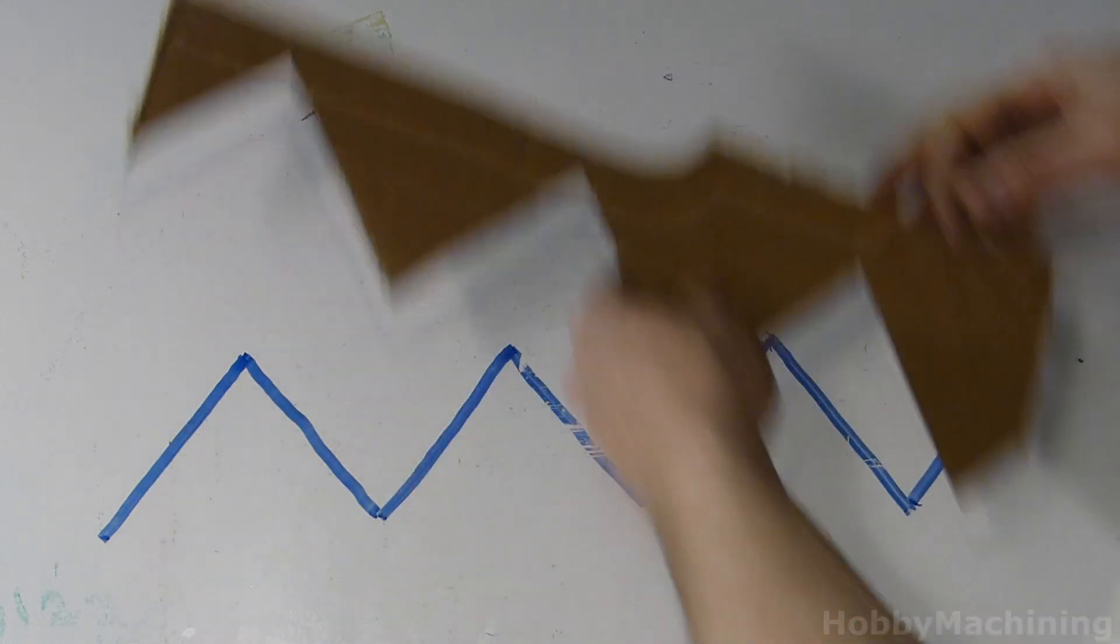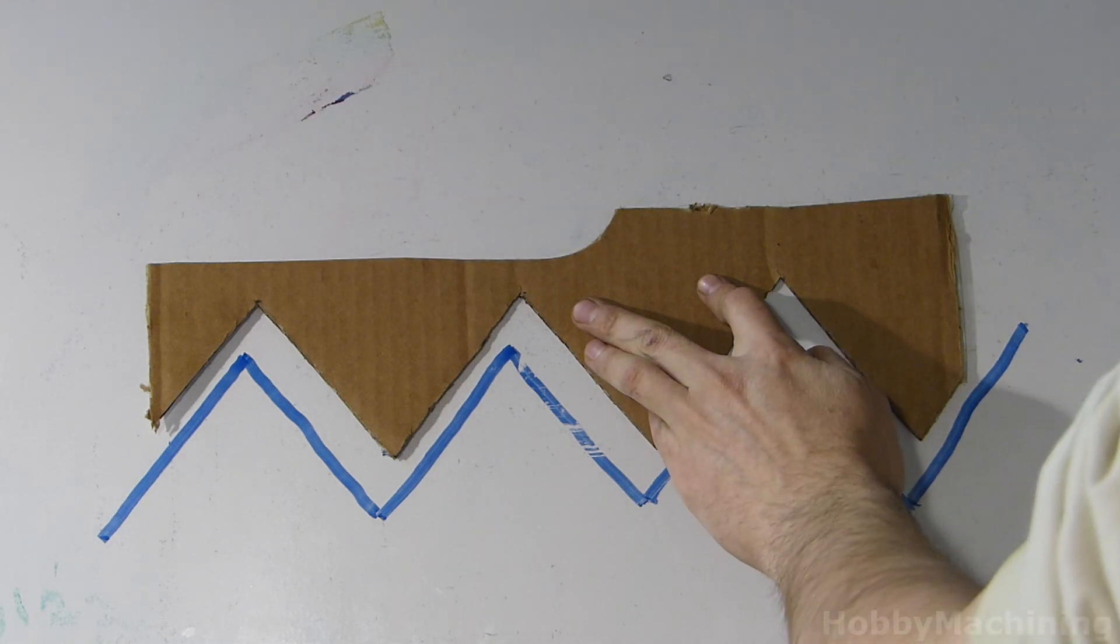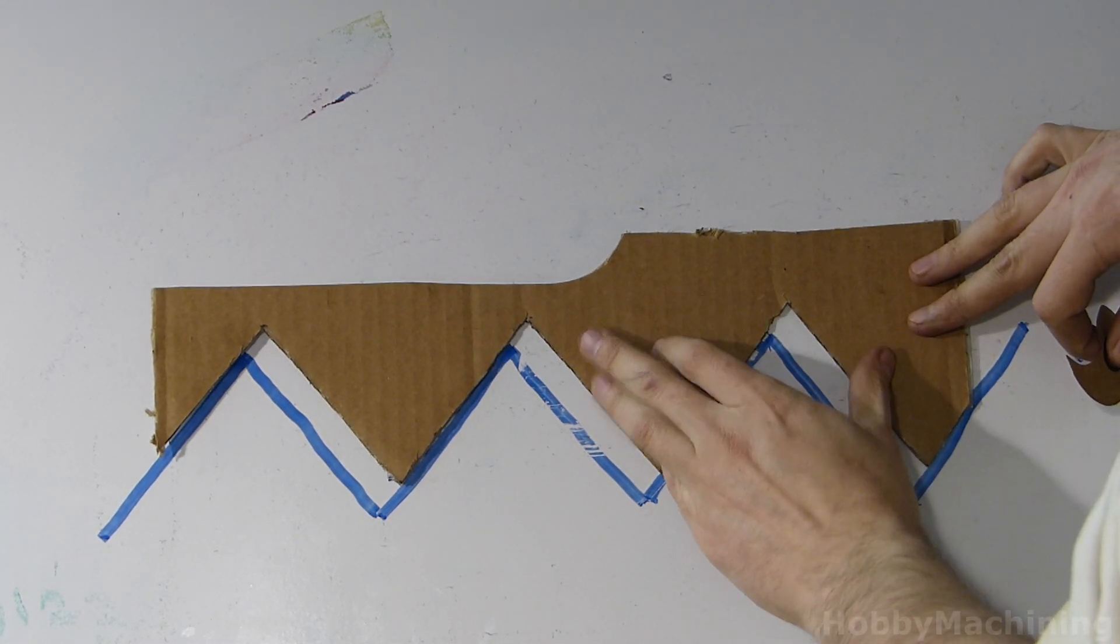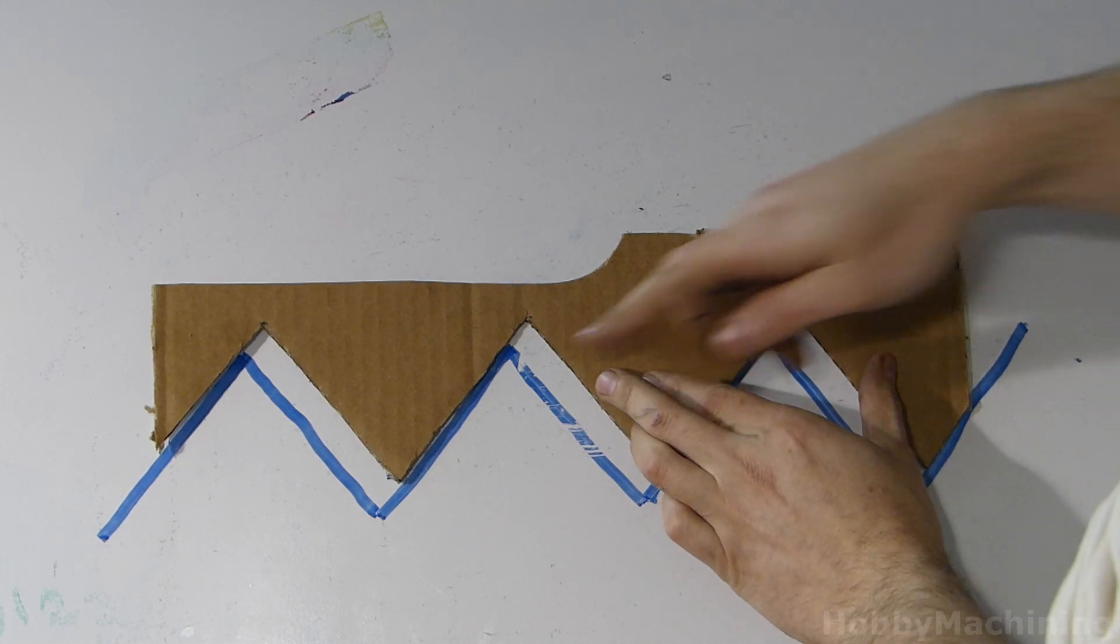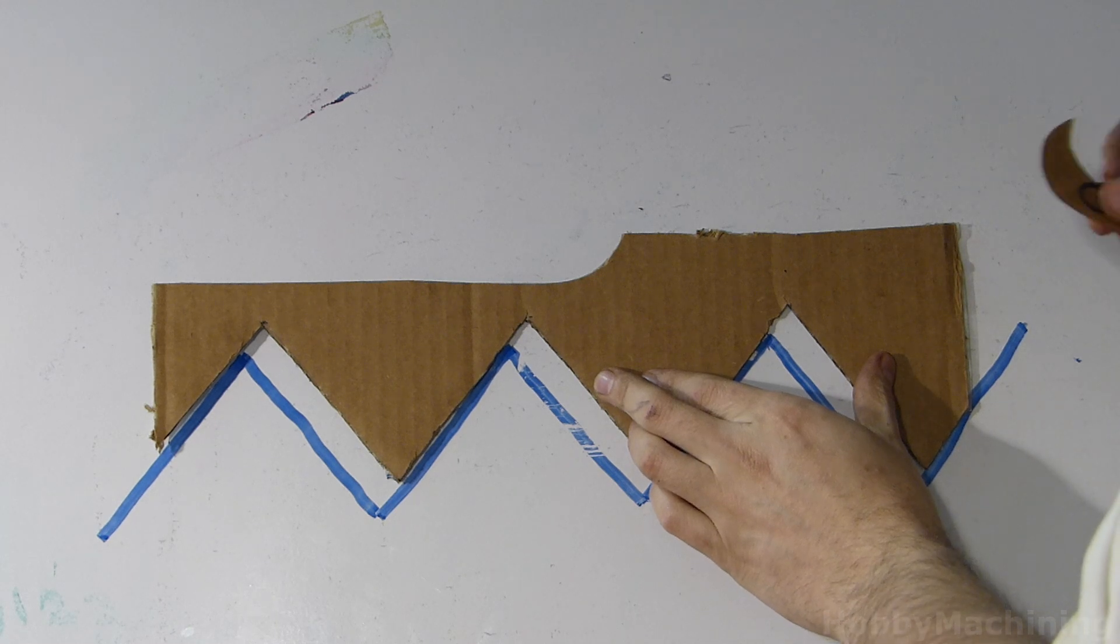On the mill, let's say this is your feed screw, and this represents the table and our piece of work that we're cutting. Now, here we have taken up the slack, so we're in contact here, we're feeding that direction, everything's good.